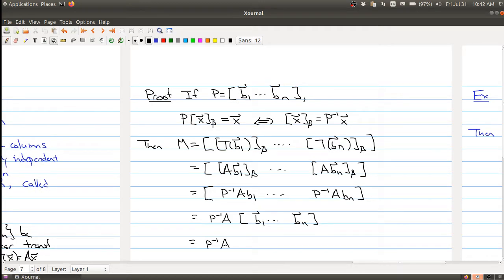So this is P inverse AP, but that actually is the matrix D since A is equal to P times D P inverse.